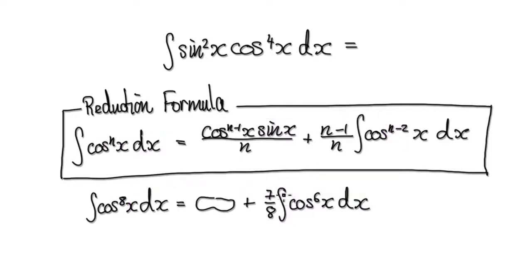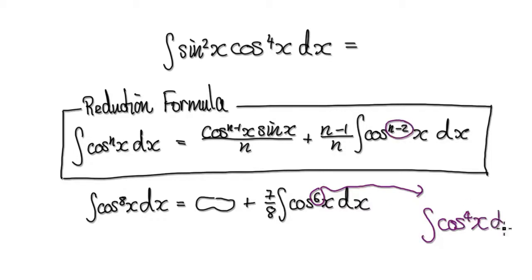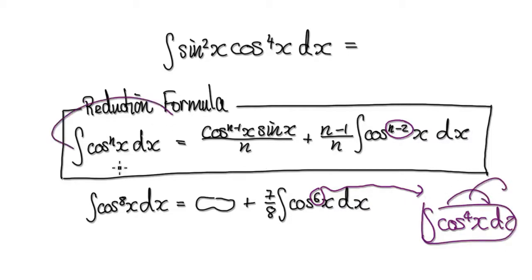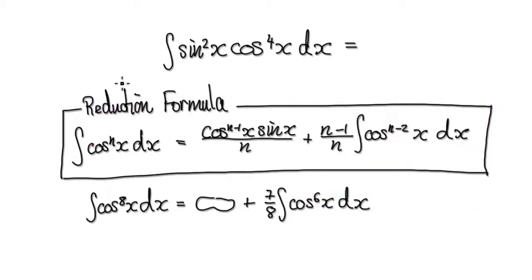So this thing here will then be slightly easier to integrate, and then you would apply the reduction formula again. Later on, you're going to get something along the line of cos to the power of two less, which will be cos⁴x dx, and then you apply it again and again and it becomes simpler. So if you don't understand this, track back to one of the early videos. So let's now try and integrate this using the reduction formula.